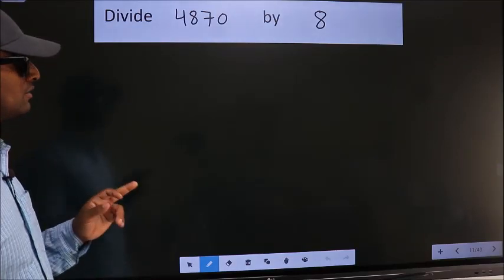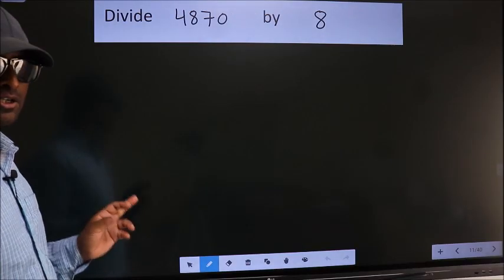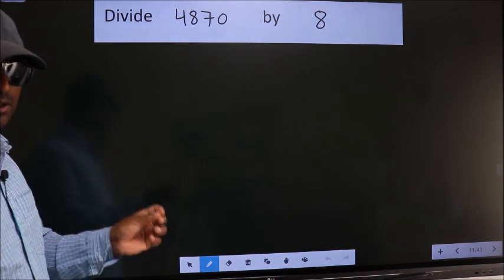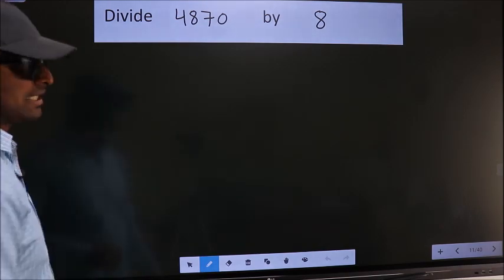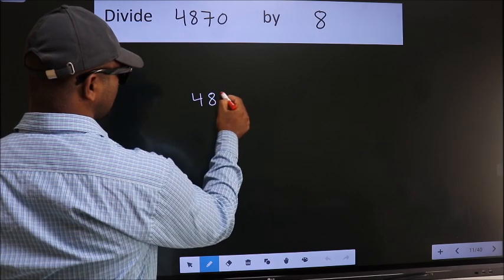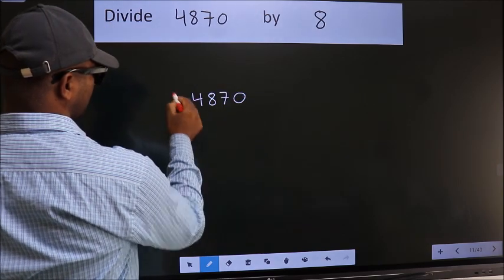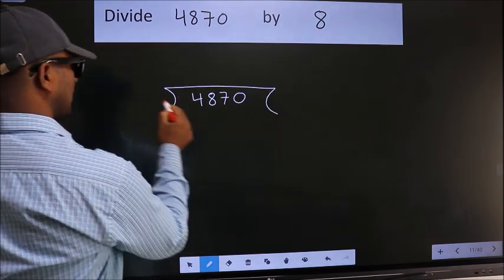Divide 4870 by 8. To do this division, we should frame it in this way: 4870 here, 8 here.